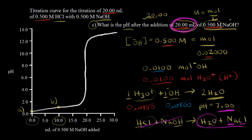So the pH after adding 20 mL of base is 7.00, which we can locate on our titration curve at 20 mL added. This is the equivalence point. We've added enough moles of base to completely neutralize the acid present, so we've reached the equivalence point.